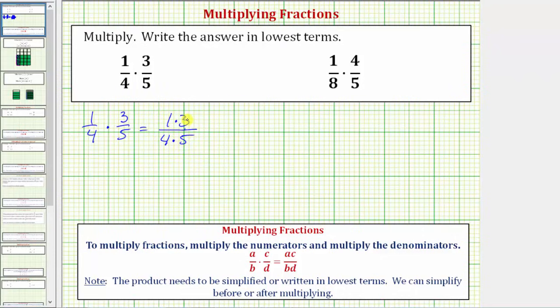But before we find these products, let's see if we have any common factors other than 1 between the numerator and denominator. Notice in this case, there are no common factors other than 1 between the numerator and denominator. So we go ahead and find these products, knowing the fraction will be in lowest terms or simplified. The numerator is 1 times 3, which equals 3. The denominator is 4 times 5, which equals 20.